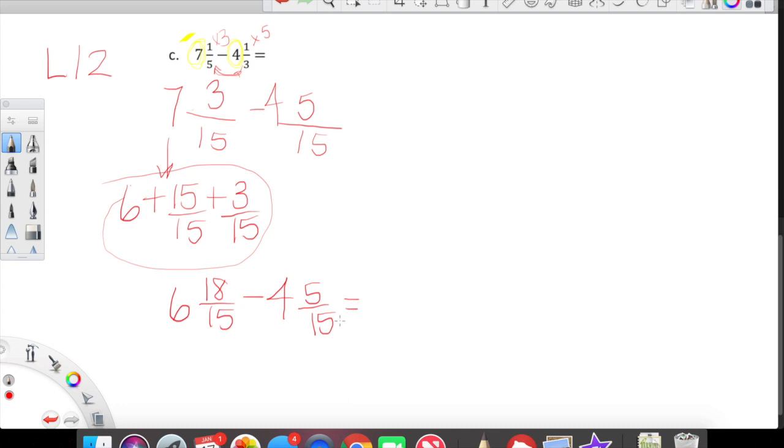So let's rename this whole addition train as 6 and 15 fifteenths plus 3 fifteenths is 18 fifteenths. So we just renamed 7 and 3 fifteenths as 6 and 18 fifteenths because we are attempting to take away 4 and 5 fifteenths. Sweet! Now we can absolutely do that. Let's subtract our whole numbers first. 6 minus 4, no problem, that is 2. And now we're looking at 18 fifteenths minus 5 fifteenths or 18 minus 5 which is 13 and then our denominator is 15. That fraction cannot be simplified. So that is our final fantastic answer.